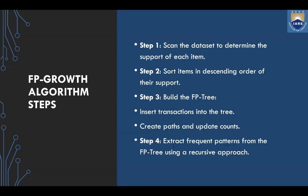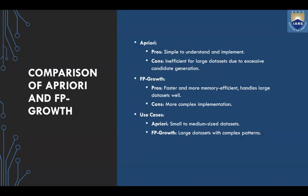The steps involved in the FP Growth algorithm are: first, scan the dataset to determine the support of each item; next, sort items in descending order of their support; then build the FP tree by inserting the transactions into the tree; create paths and update counts; and finally extract frequent patterns from the FP tree using a recursive approach. These are the two main algorithms used in market basket analysis.